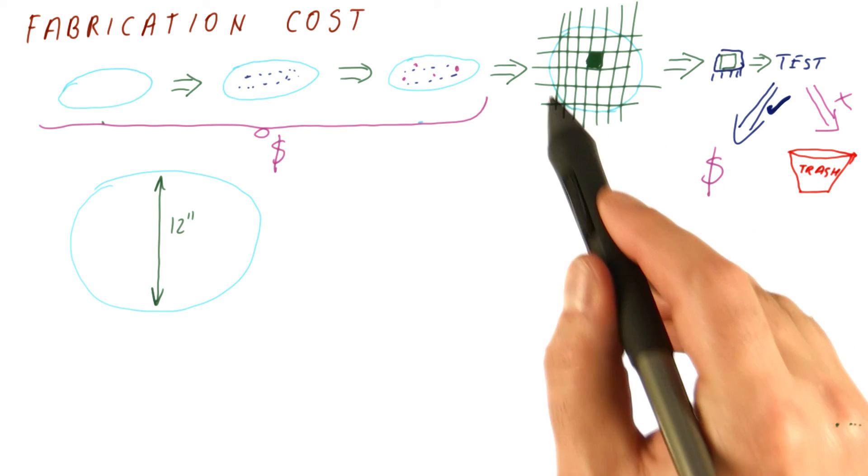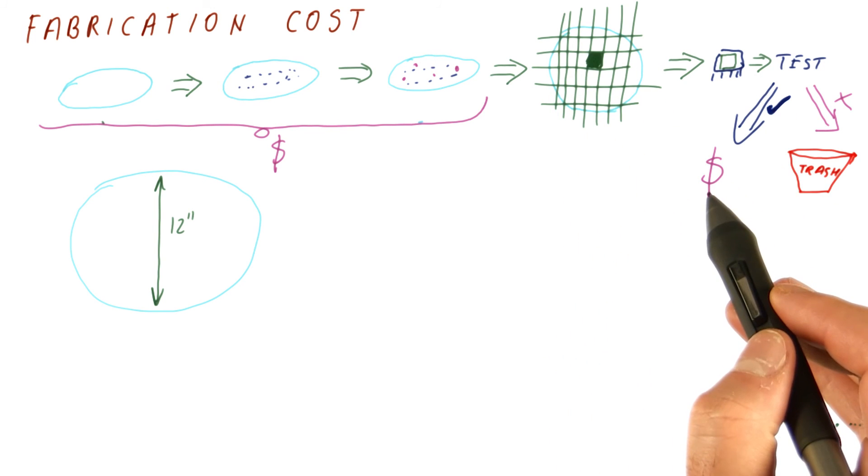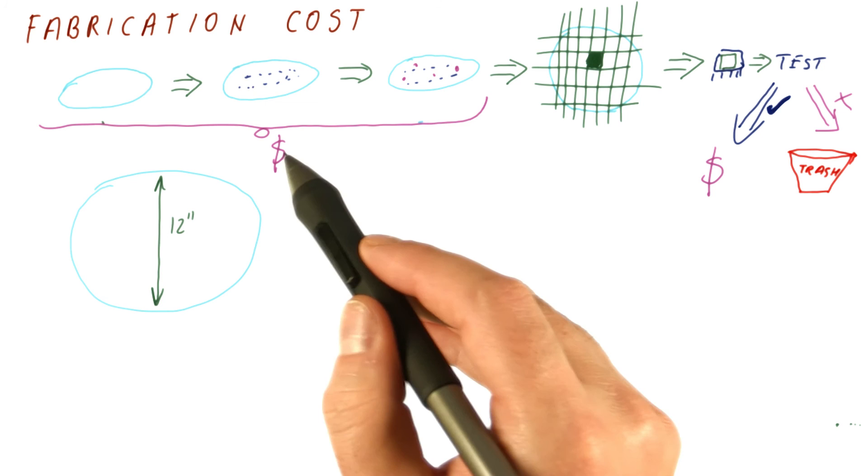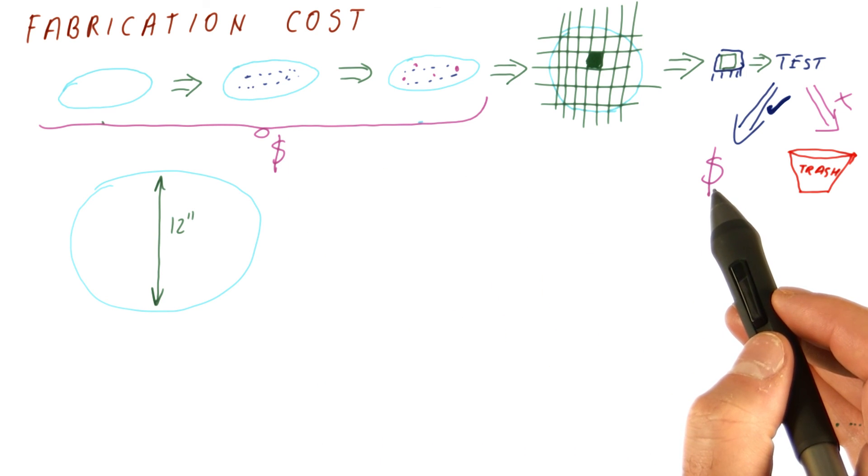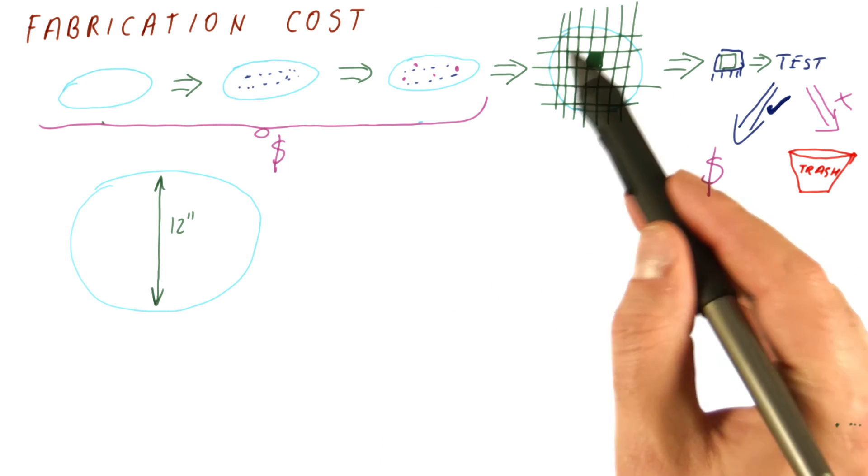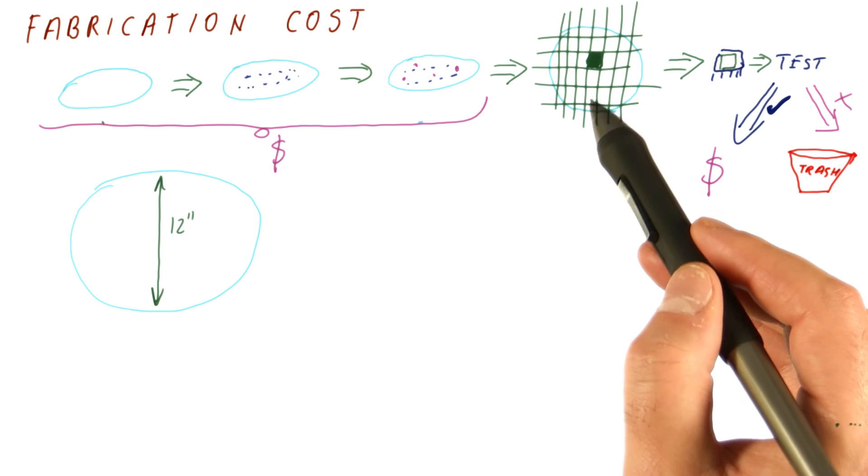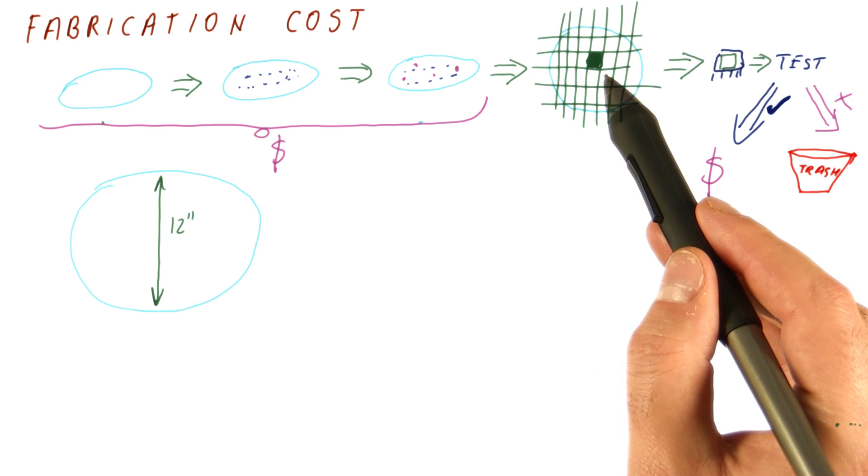If we have very large chips, we will get fewer of them, when we test them especially, and we will divide this cost with fewer chips. So it seems like the cost of a single chip is going to be linearly proportional to its size. But in fact, things are worse than that.